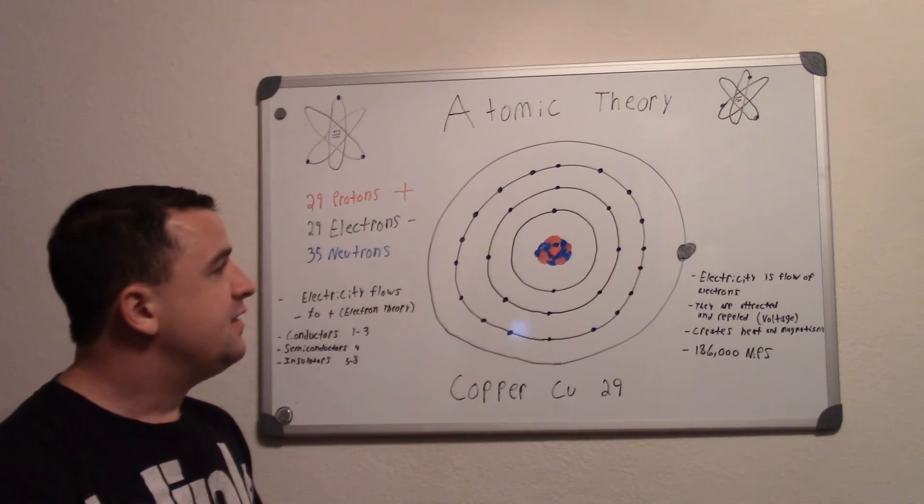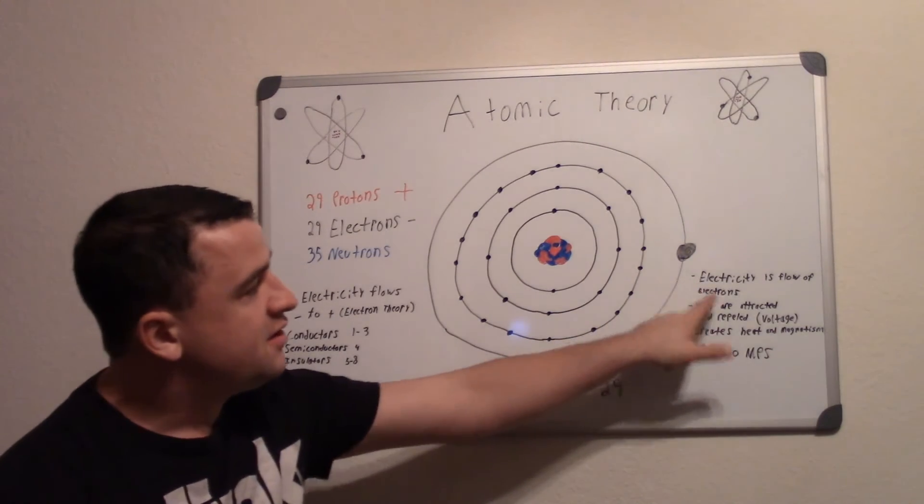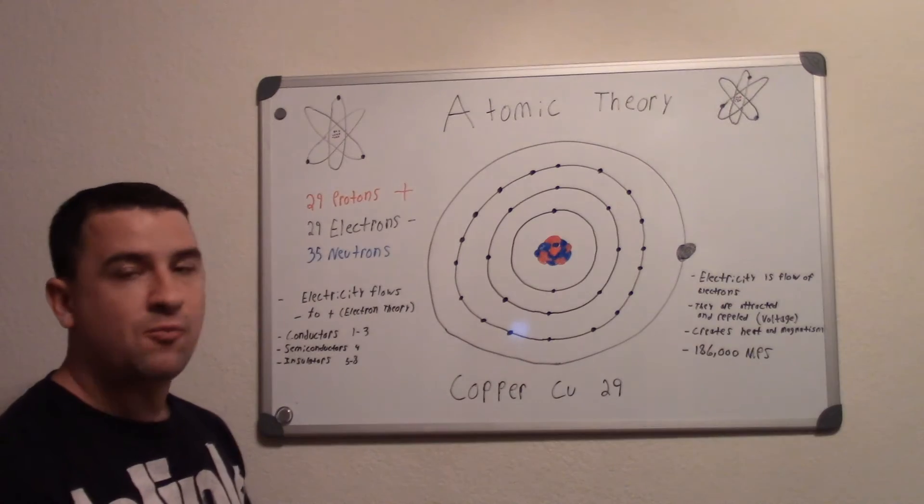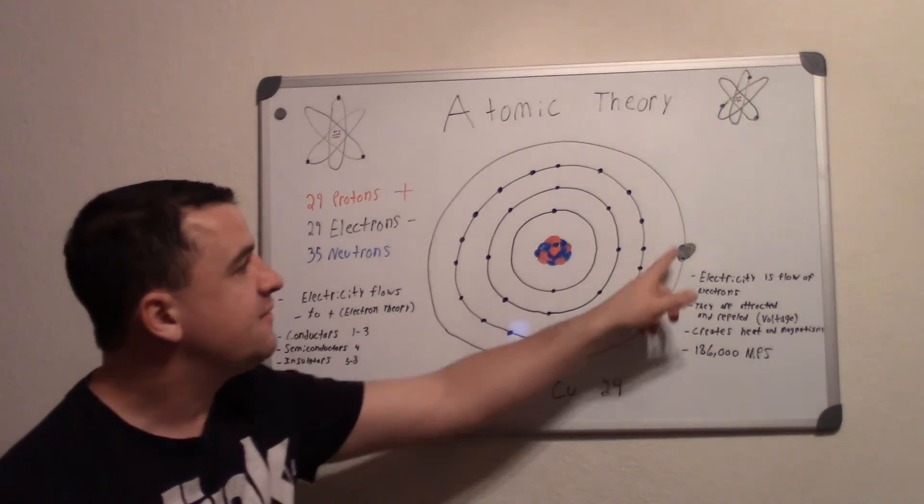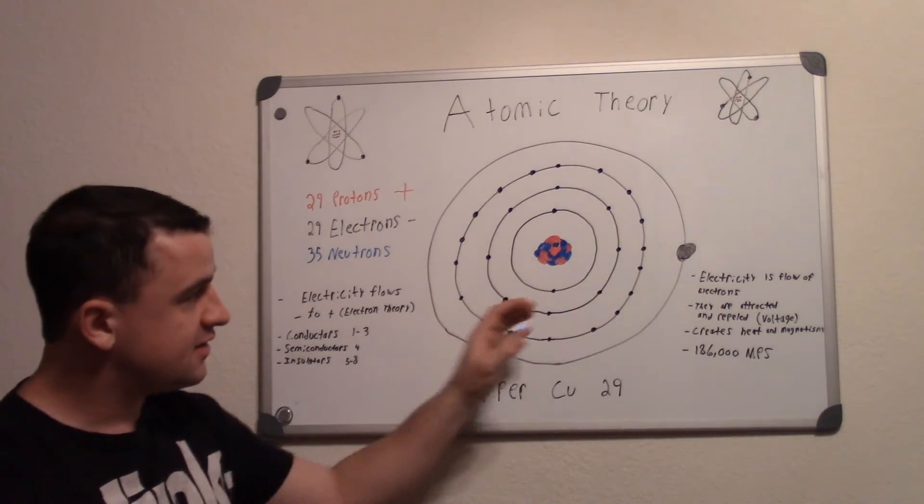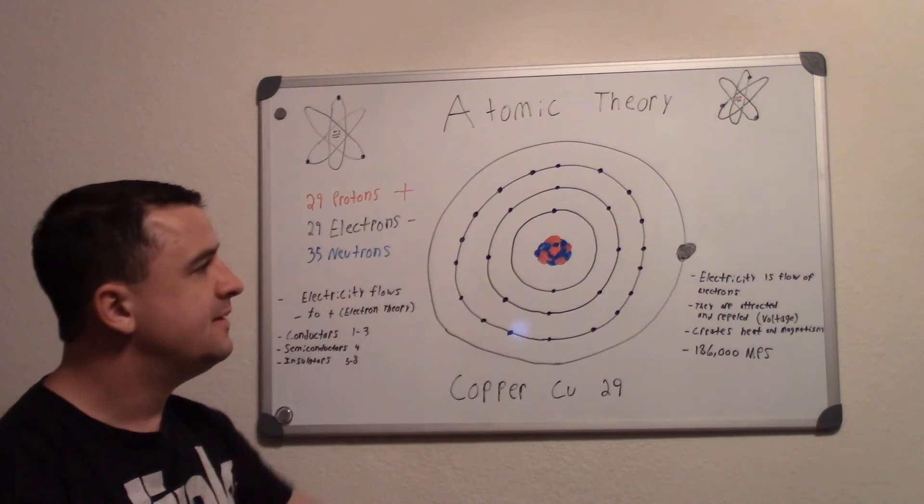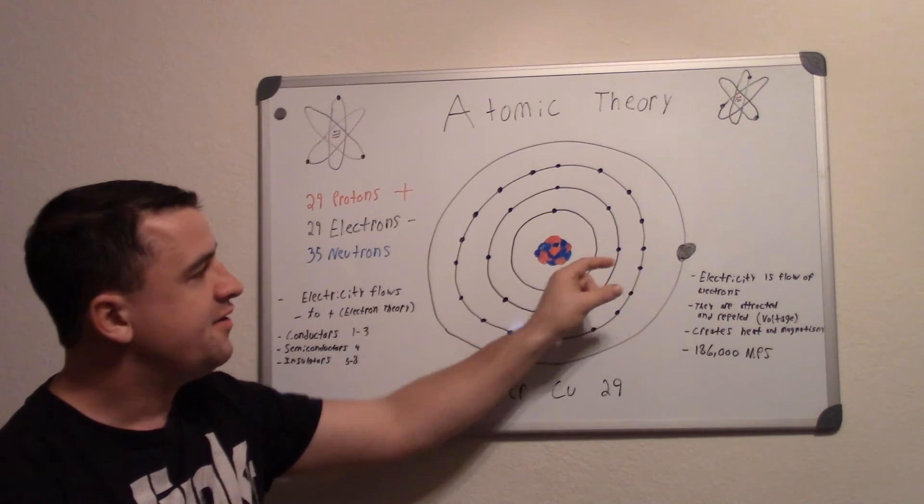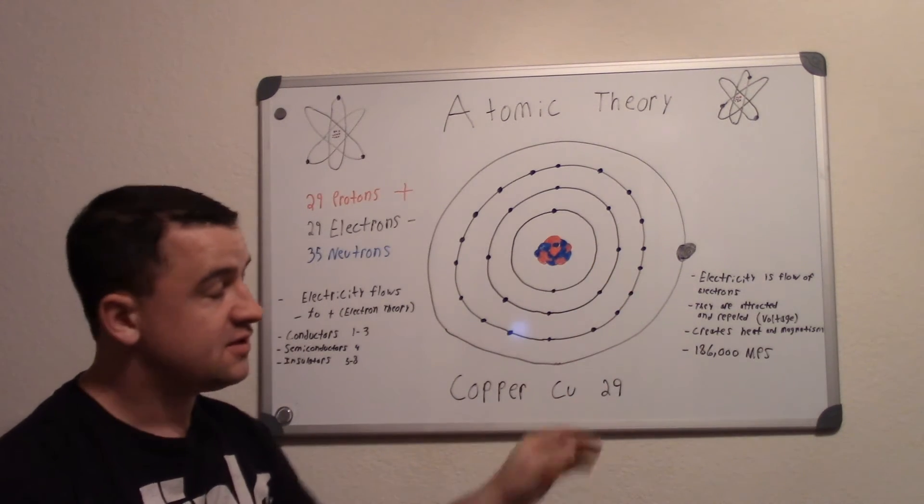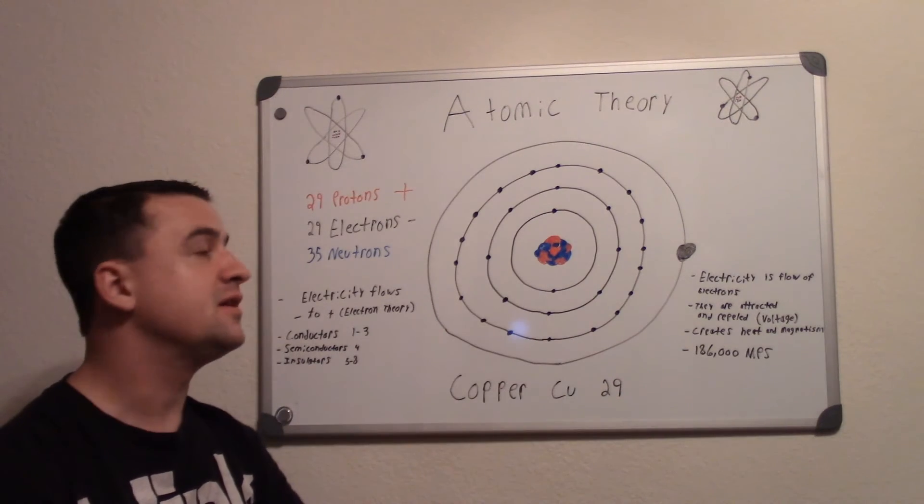And so it flows as I state right here: electricity is the flow of electrons from one atom to another, and it's that free electron that's flowing because like I said it's the one that's loosely held to it. So when this electron leaves one of the copper atoms and goes to the next one, it kicks one out and another one takes its place.